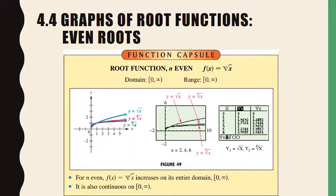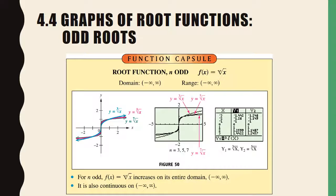Here's a function capsule for a root function when the root is an even root: the domain is 0 to infinity and the range is 0 to infinity as well. You can see a few graphed — the square root of x, the fourth root of x, and the sixth root of x. The graph is continually increasing and continuous on its domain. For an odd root, the domain is all real numbers, as is the range, and it is increasing and continuous over the entire domain.